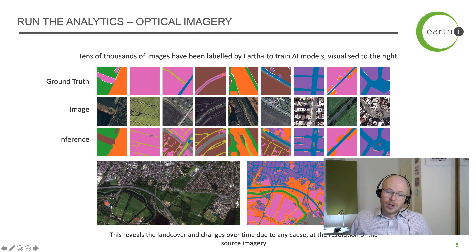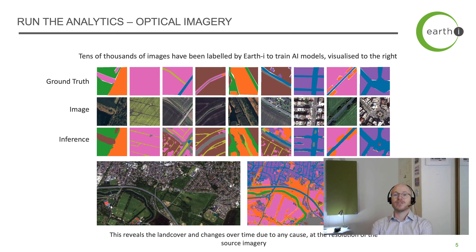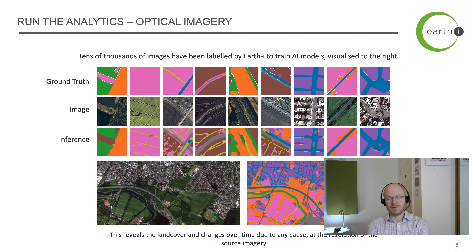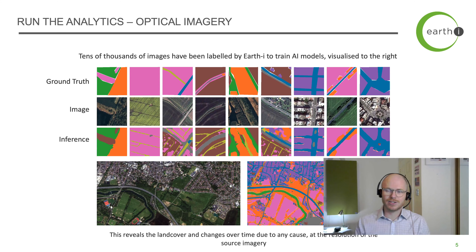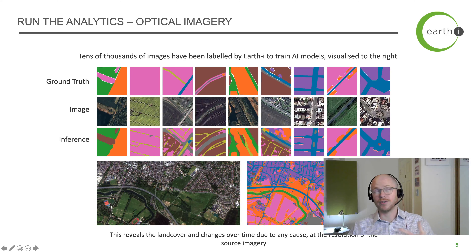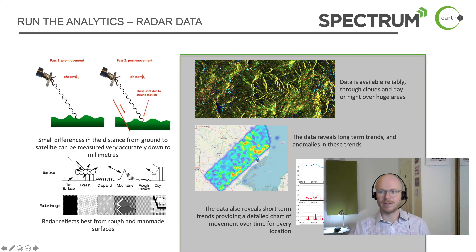The AI process — the first part is for the optical imagery. We've trained a computer with tens of thousands of labeled images, so the computer has effectively been taught how to see — to tell the difference between trees, fields, roads, buildings, and that type of thing. Doing this manually is highly laborious and as human beings we don't actually have the accuracy either. The computer is far better at this than we are, and we can run it over huge amounts of images very quickly, which makes it cost effective.